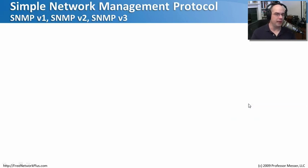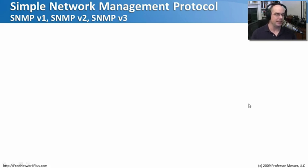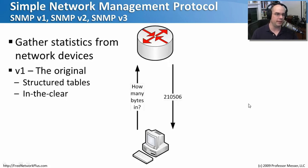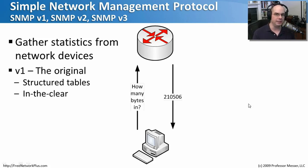There's one more big management protocol I almost forgot about: SNMP, the Simple Network Management Protocol. There are different versions of SNMP, all essentially doing the same thing but working differently under the surface. SNMP is most often used to gather statistics from network devices. If you're responsible for checking the uptime and performance of a router, switch, or server, you can use an application that uses SNMP to communicate to these devices, and those devices need to know how to respond to SNMP requests.